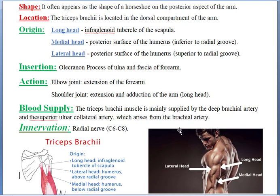The triceps brachii is located in the dorsal compartment of the arm. The arm has two compartments: the ventral compartment and the dorsal compartment. The ventral compartment muscles are the biceps, brachialis, and coracobrachialis, and the dorsal compartment muscle is only one — the triceps.